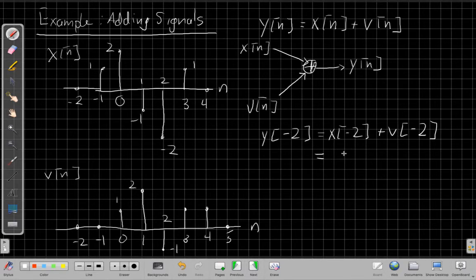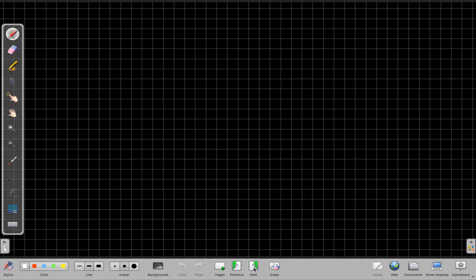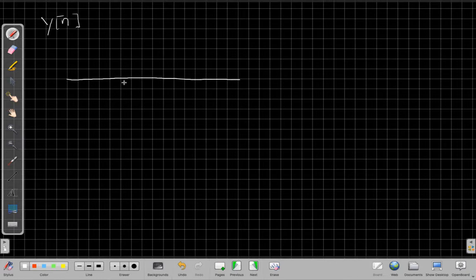So that would be equal to, well, x at minus 2, I come over here, is 0. v at minus 2, the amplitude is also 0. That's kind of a boring point. y at minus 2 is equal to 0. What am I going to do? Am I going to hop pages? I think I will. I'll go to the next page, and we can draw y of n up here, one sample at a time. So we just said, at minus 2, it's equal to 0.